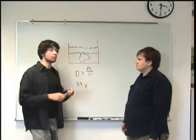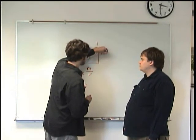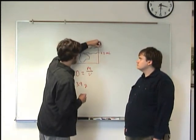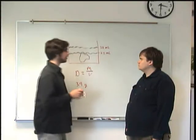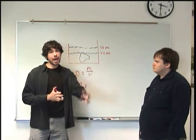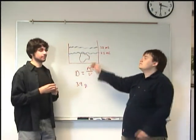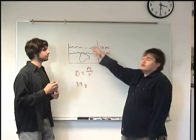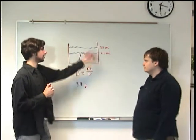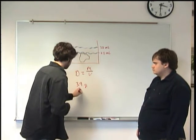So when we look at the beaker, before we drop the lump of coal in, the water level was at 25 milliliters. When we drop the lump of coal in, the water level rises to 32 milliliters. The difference between those two — that's the amount of water that was displaced, and that is the volume of the coal. The coal displaces the water, pushing it up, and the amount pushed up equals the volume of the coal. So if we take the difference, it's 7 milliliters — the volume of this lump of coal is 7 milliliters.